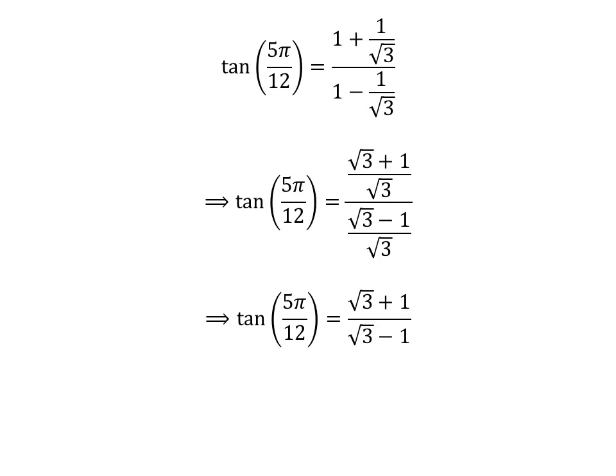Cancelling out the common factor of 1 upon square root of 3 in the numerator and the denominator of the right-hand side gives us tangent of 5 times pi upon 12 is equal to square root of 3 plus 1 upon square root of 3 minus 1.